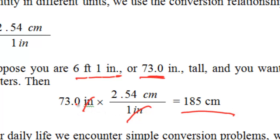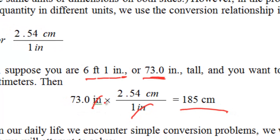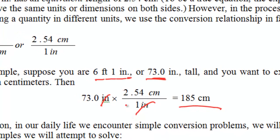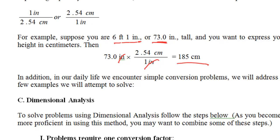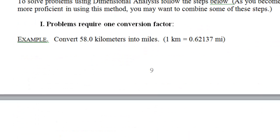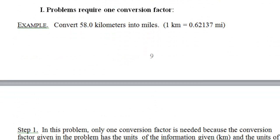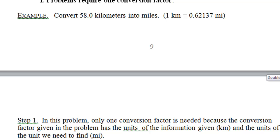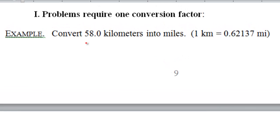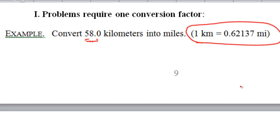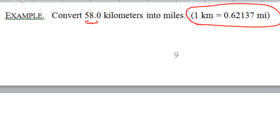When we do conversions, the calculation involves the units as well as the numbers. This method of conversion is called dimensional analysis. For example, to convert 58 kilometers to miles, you are given the value of 58 kilometers and the conversion statement relating kilometers to miles.